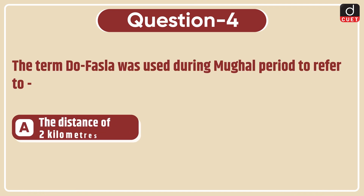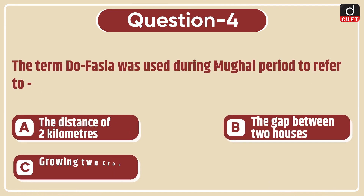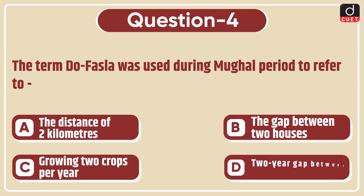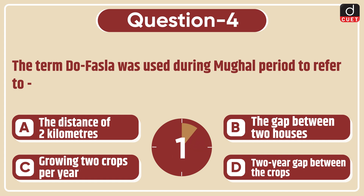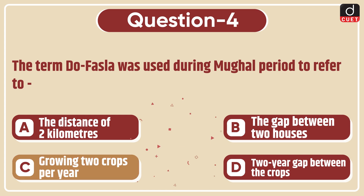Next question: the term do-fasla was used during the Mughal period to refer to the distance of 2 km, the gap between 2 houses, growing 2 crops per year, or a 2-year gap between crops? The correct answer is option C, growing 2 crops per year.